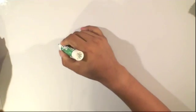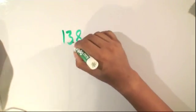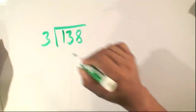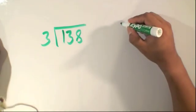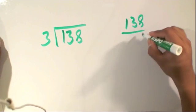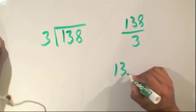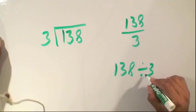Okay, now we're going to take a look at a complex division problem. So we'll have 138 divided by 3. Now let me remind you that this can also be written as 138 over 3, and 138 divided by 3.